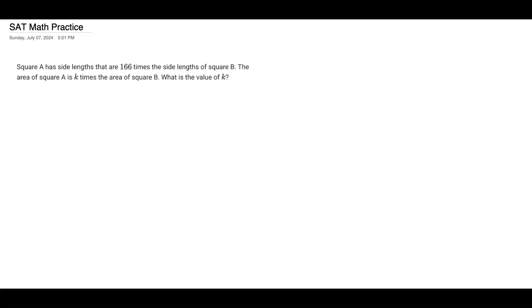This says square A has side lengths that are 166 times the side lengths of square B. The area of square A is k times the area of square B. What is the value of k?